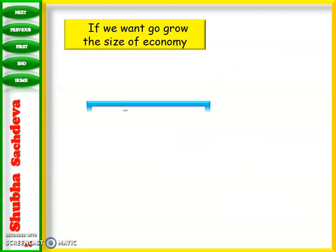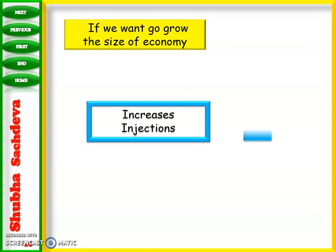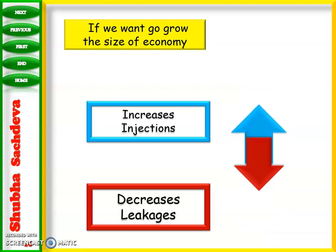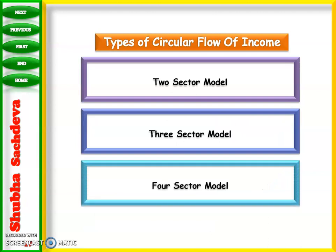If we want to grow the size of the economy, we use our four sectors: household sector, producer sector, government sector, and rest of the world. However, due to the reduction in the CBSE Class 12 syllabus, you only have the two-sector model. Otherwise, circular flow of income can be a two-sector, three-sector, or four-sector model.